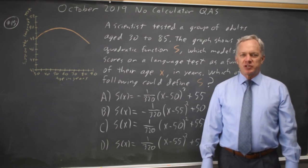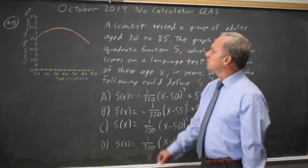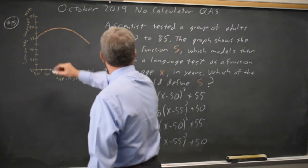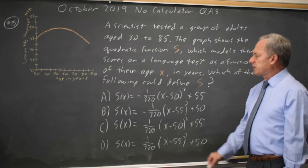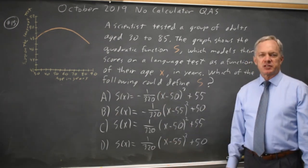This is non-calculator question number 15. College Board gives us the graph of a parabola fitting data for language test scores versus age, and they ask which of these four options best fits the data.